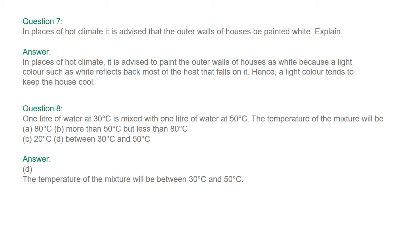Question number seven: in places of hot climate, it is advised that the outer walls of houses be painted white — explain. In places of hot climate, the outer walls are painted white because a light color such as white reflects back more of the heat that falls on it. Hence, a light color tends to keep the house cool.